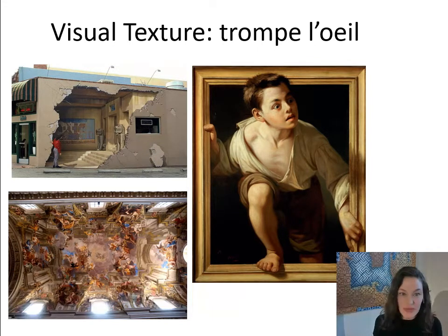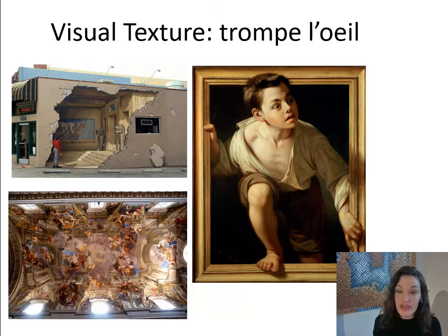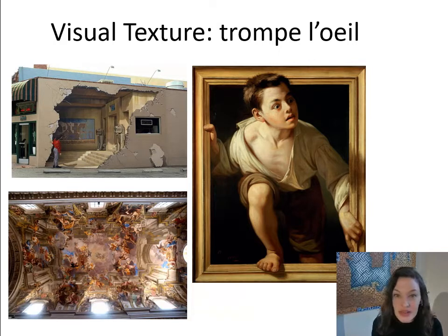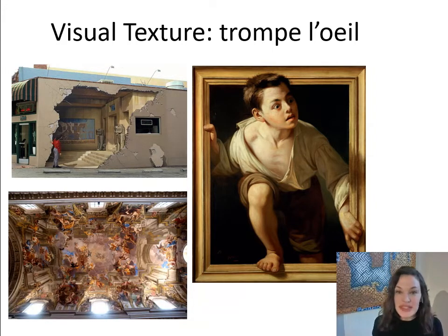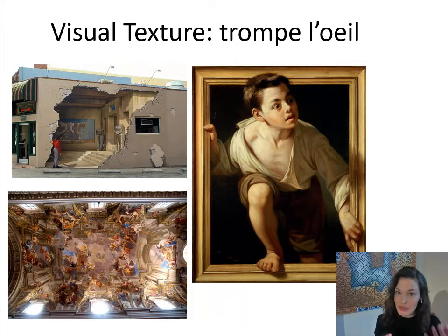Trompe l'oeil is one of the most extreme versions of visual texture, where textures are so lifelike that we are tricked into thinking it's a real thing. Looking at the painting of the boy coming out of the frame, the frame is actually part of the painting and not an actual frame itself. His skin, clothing, and the frame all have different textures and look so real that it looks like he might actually be coming out of the wall.